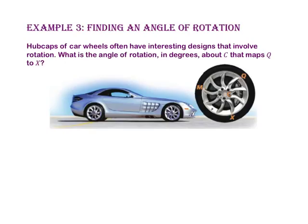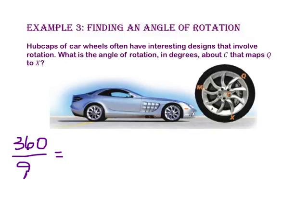In Example 3, we will find an angle of rotation. Hubcaps of car wheels often have interesting designs that involve rotation. What is the angle of rotation in degrees about point C that maps point Q onto point X? One full rotation is 360 degrees and there are nine spokes on this hubcap, making each set of spokes have a 40 degree angle at the center.